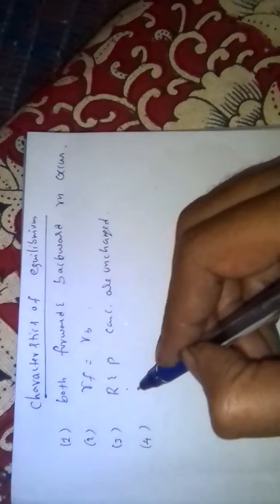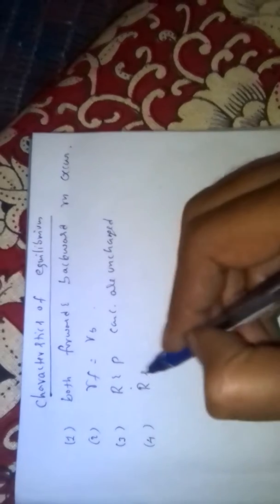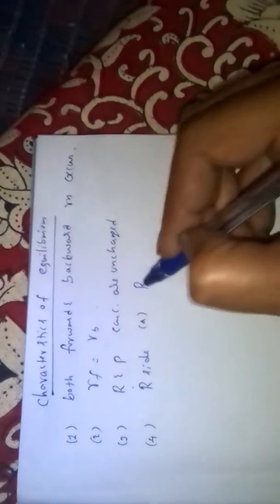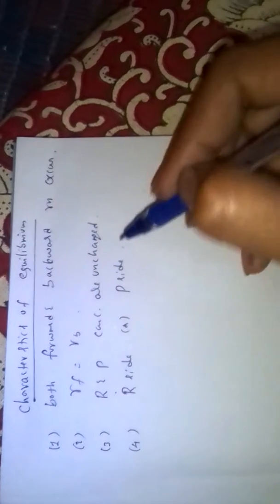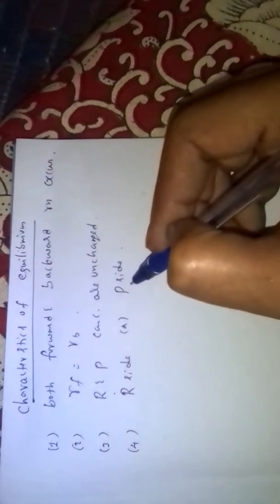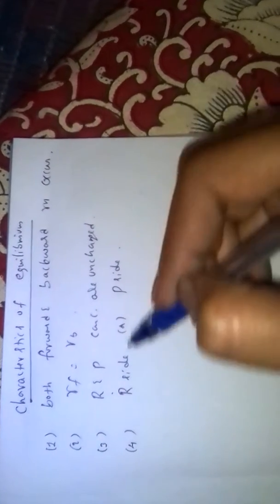At equilibrium state, all the reactant and product species are present. Equilibrium can be reached from the reactant side or from the product side — we can start the reaction with reactants or with products and still attain equilibrium.